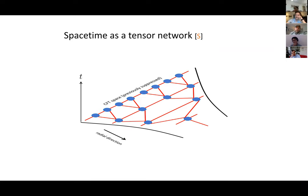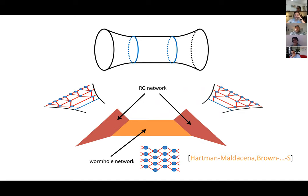Going back to Hartman and Maldacena and something we elaborated on in our complexity-equals-action paper, you can think of the growing wormhole as composed of three pieces. The left and right outermost pieces are like the RG part of the network, which maps you from the microscopic UV Hilbert space to some effective low-energy coarse-grained Hilbert space. Then you have a growing wormhole part corresponding to the growing time evolution. We had a simple argument that if you apply the UV time evolution to the outside of this network, you can pass it through the RG network and produce an effective dynamics at the infrared scale, which just corresponds to growing the wormhole.